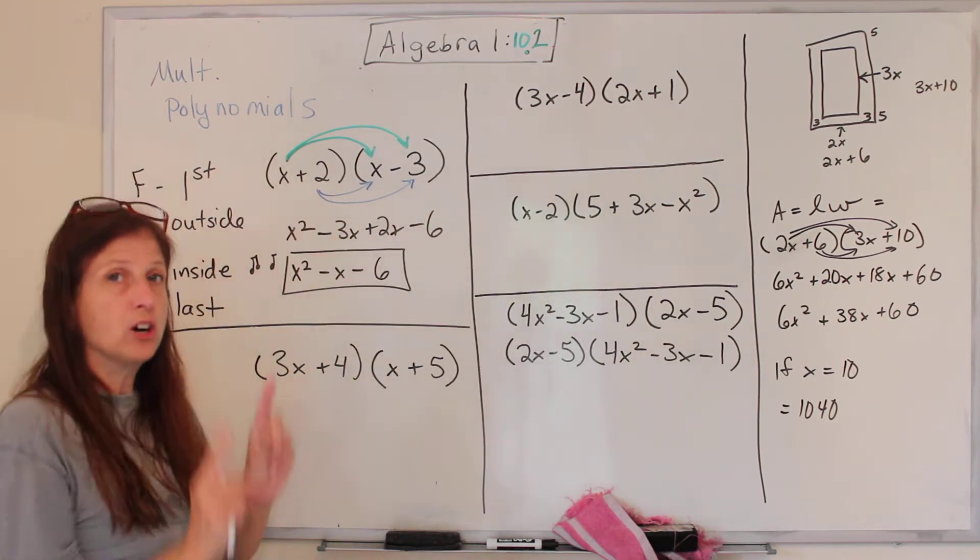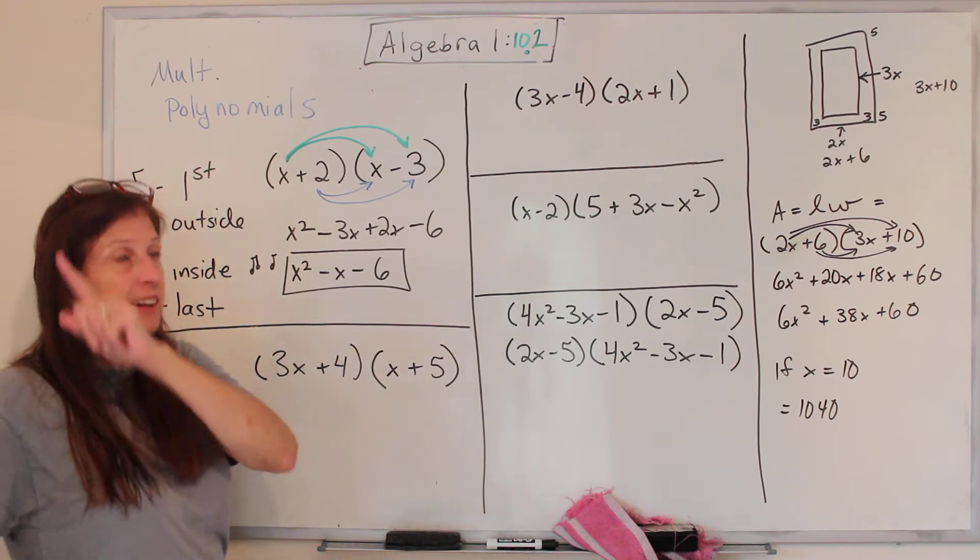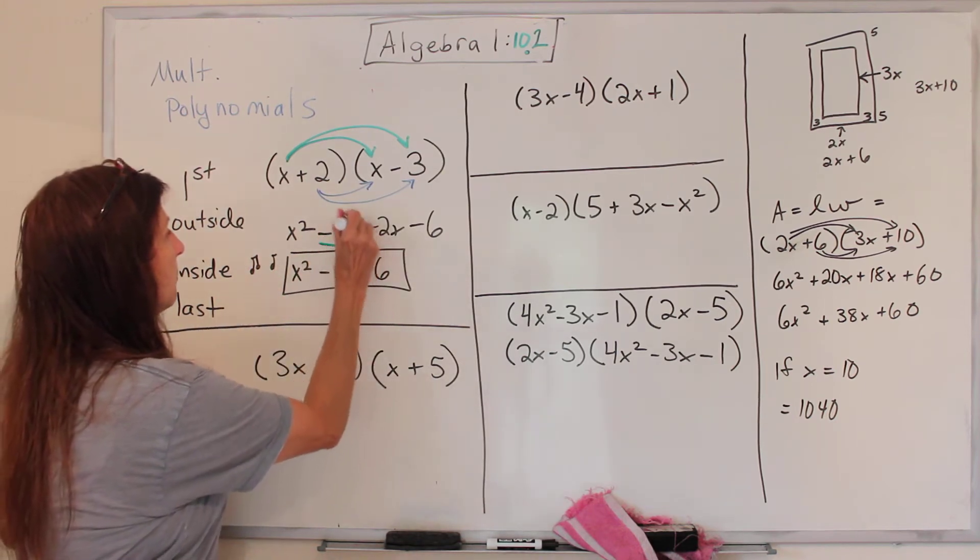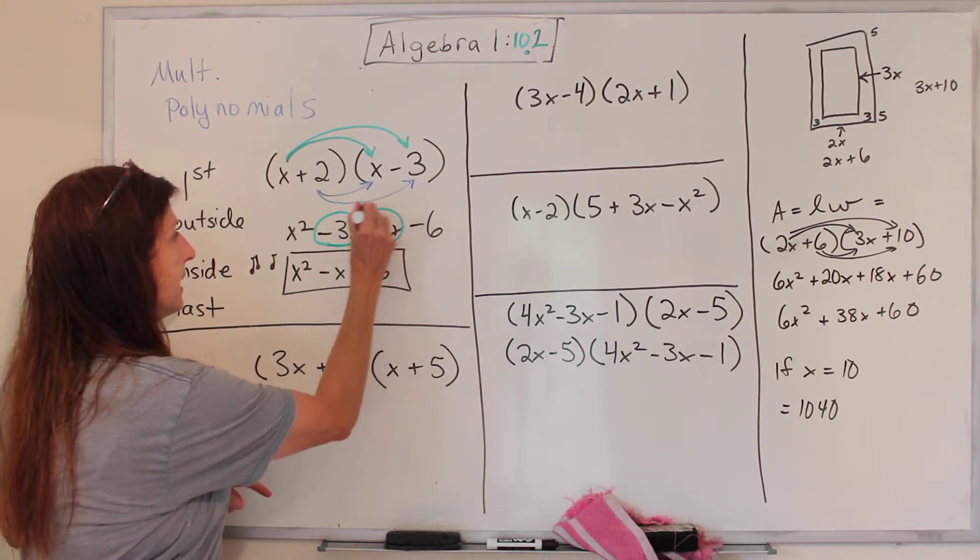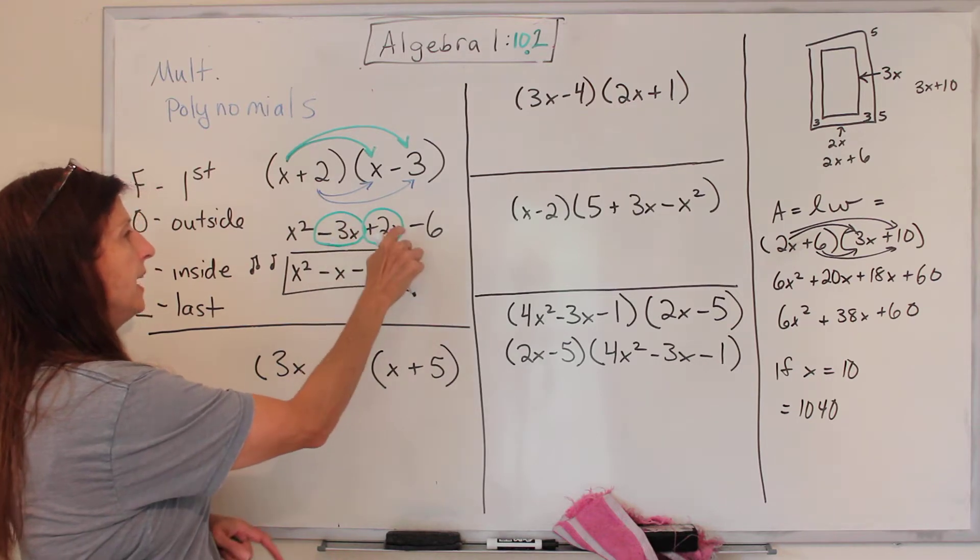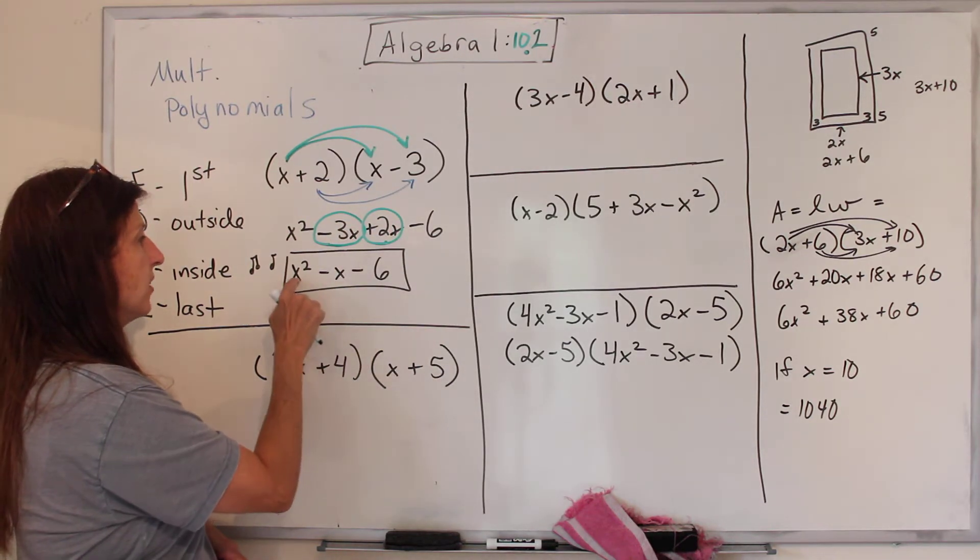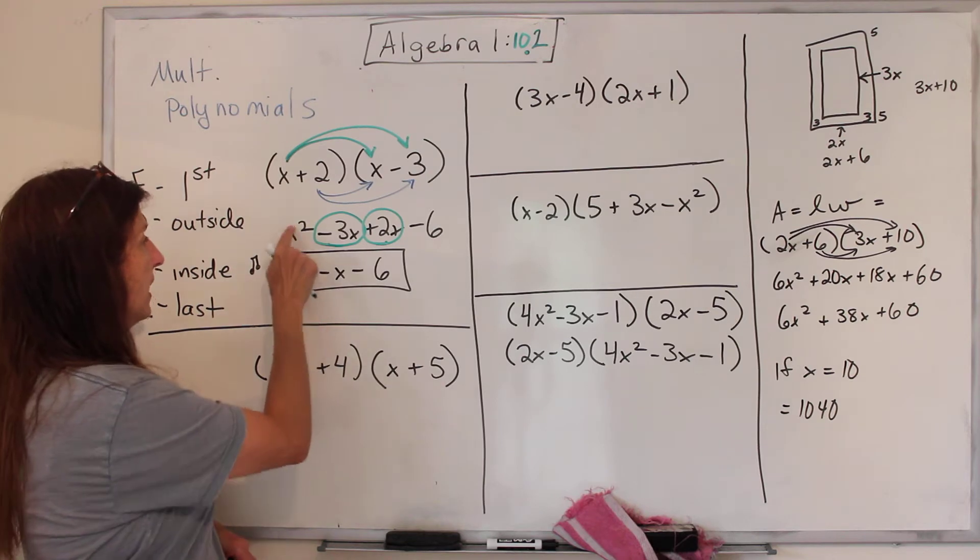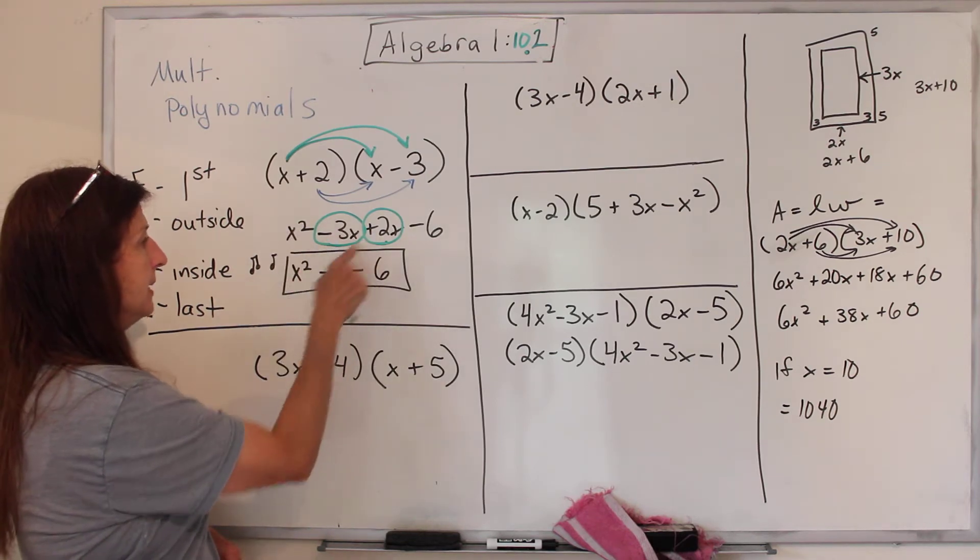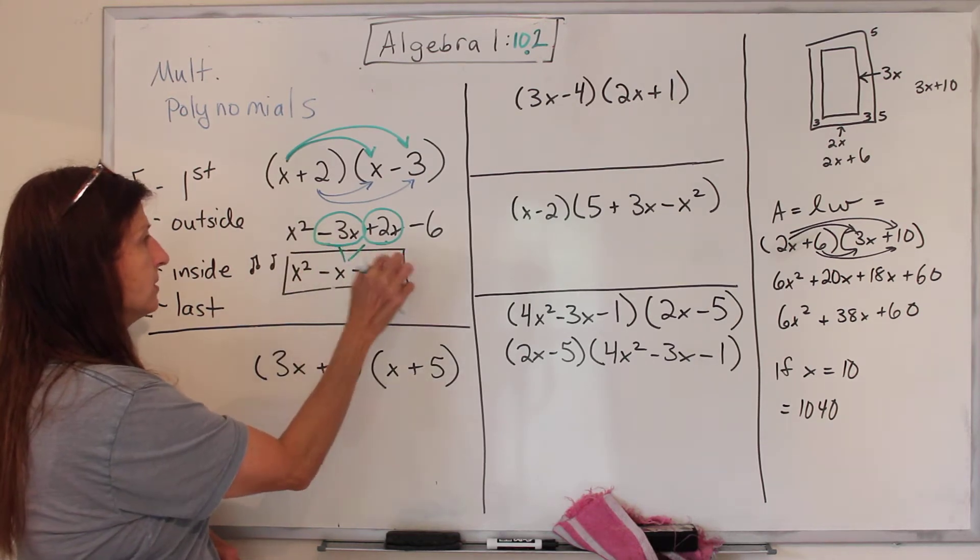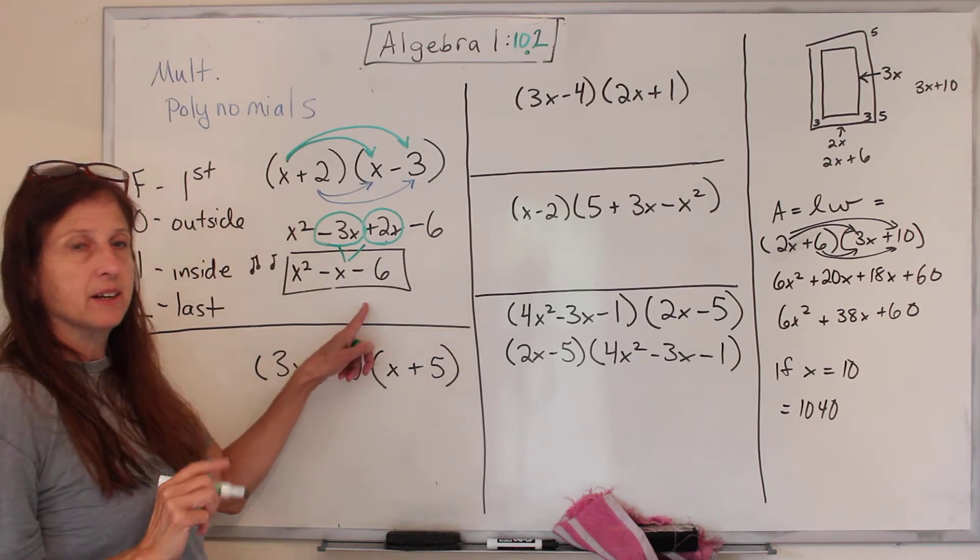Now, you can't add and subtract everything, but you can add and subtract these middle ones. So we're going to gather this and this. Negative 3x plus 2x is negative x. So this is the answer: x squared minus x, coming from those, and minus 6.